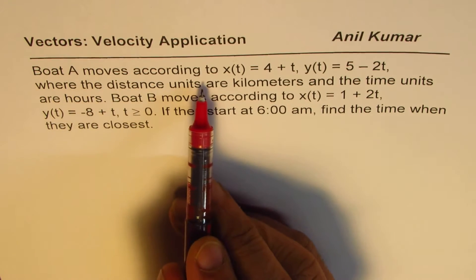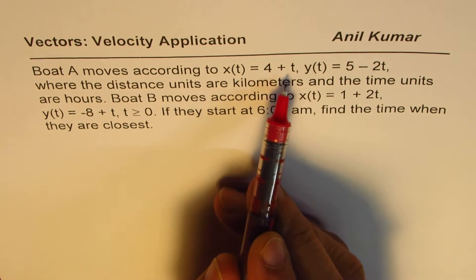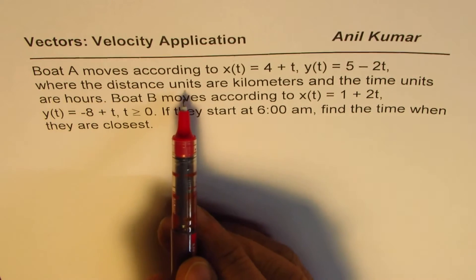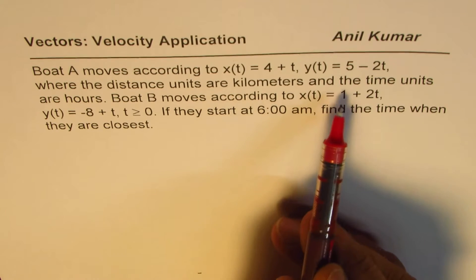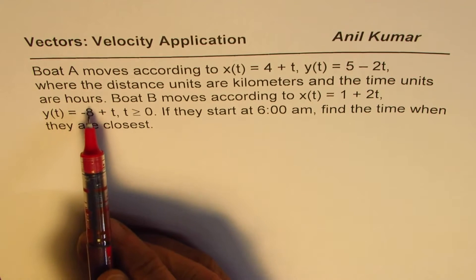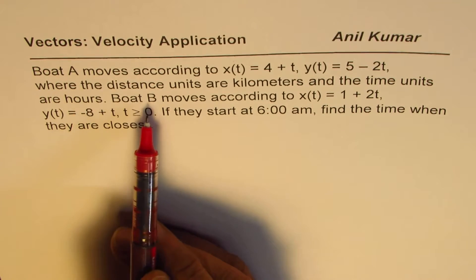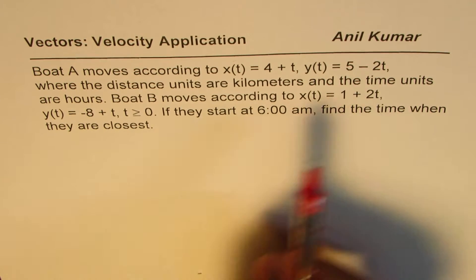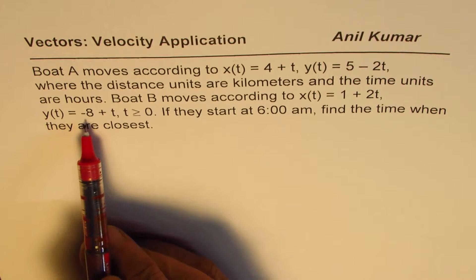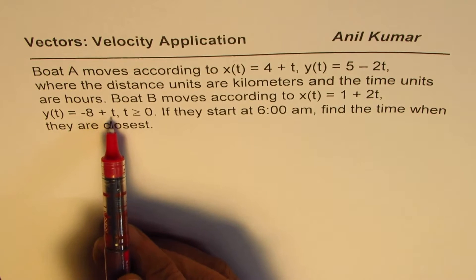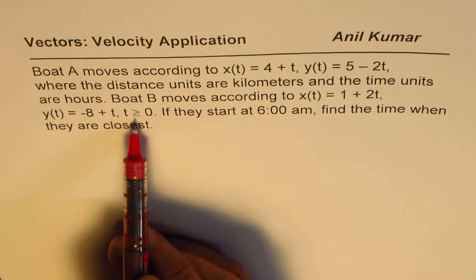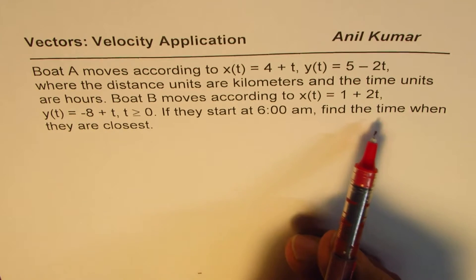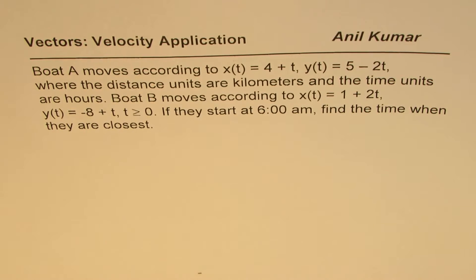The question is: Boat A moves according to x(t) = 4 + t, y(t) = 5 - 2t, where the distance units are kilometers and the time units are hours. Boat B moves according to x(t) = 1 + 2t, y(t) = -8 + t, where t ≥ 0. If they start at 6:00 AM, find the time when they are closest.